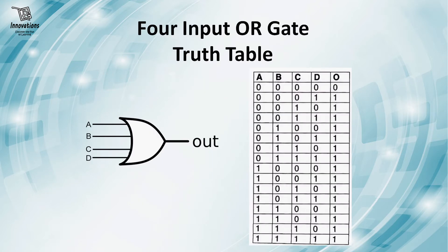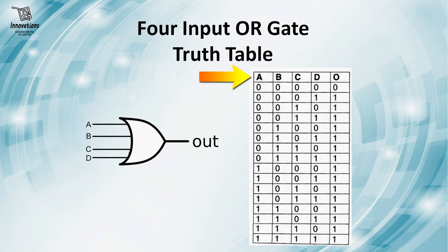Let us first have a look at how does the symbol of an OR gate look like. This is a four input OR gate with four inputs A, B, C, D and one output. And this is the truth table of a four input OR gate where A, B, C, D are inputs and O is the output.